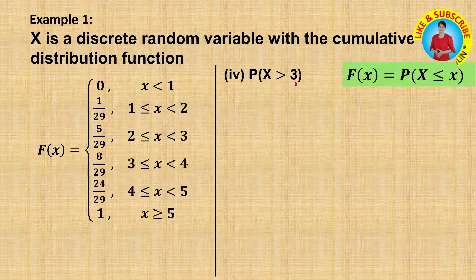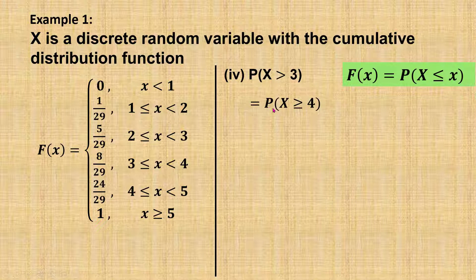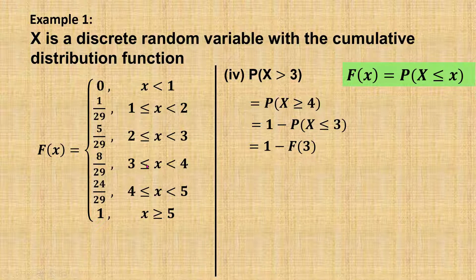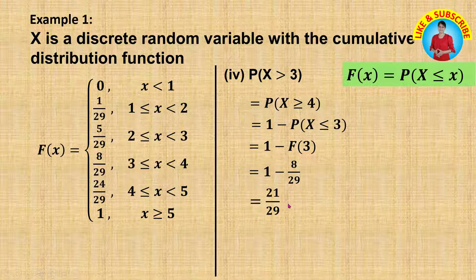Next, find the probability x greater than 3. Since x is a discrete random variable, x greater than 3 is the same as x greater than or equal to 4. Since we are using the cumulative distribution function, we change it to 1 minus P(X ≤ 3), which equals 1 minus F(3). From the cumulative distribution function, F(3) equals 8 over 29. So 1 minus 8 over 29 equals 21 over 29.